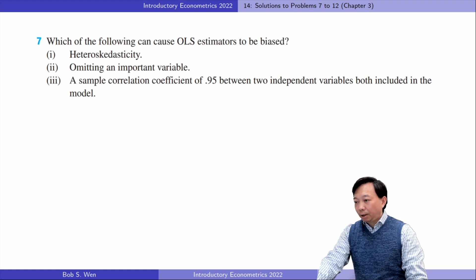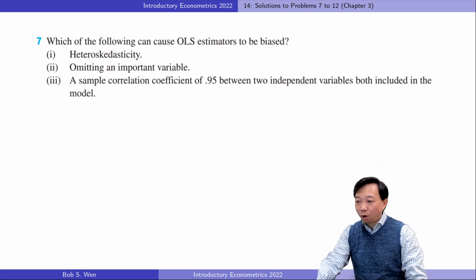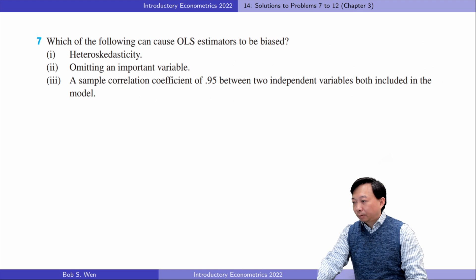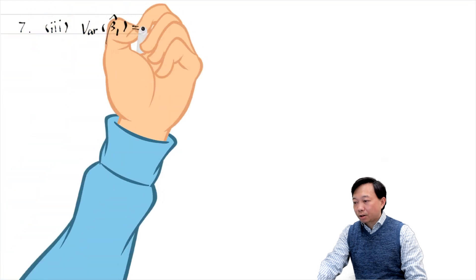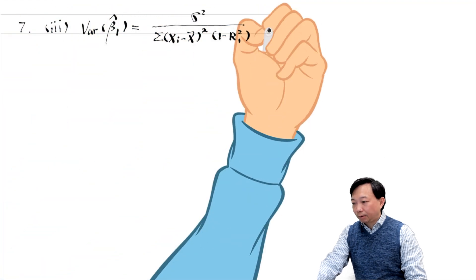In the third situation, the OLS estimators are still unbiased when two expenditure variables are highly correlated, as long as the error term is uncorrelated with the explanatory variables. The high correlation between explanatory variables leads to a large variance in the OLS estimators. Looking at the estimator's variance formula, the R-squared is close to one in this case, and therefore the variance is large.